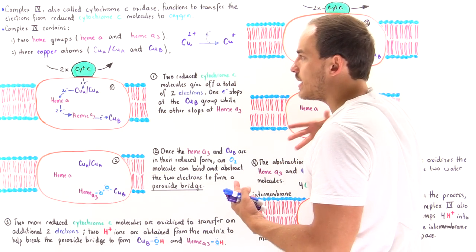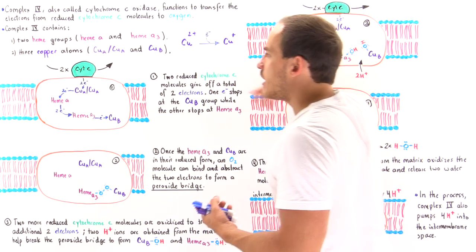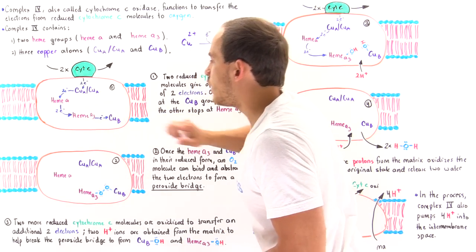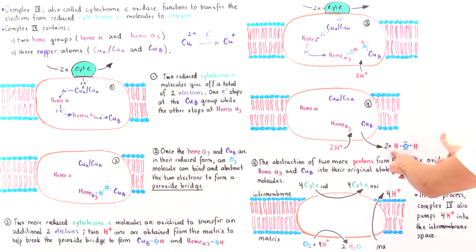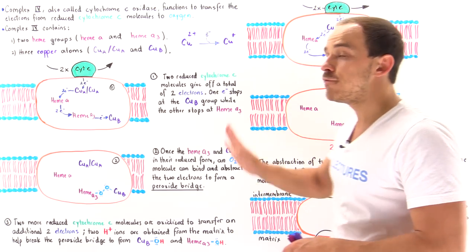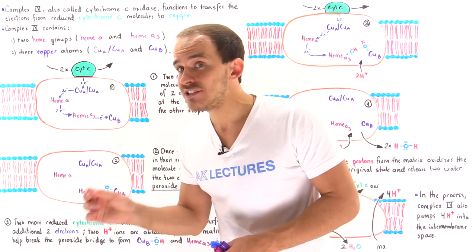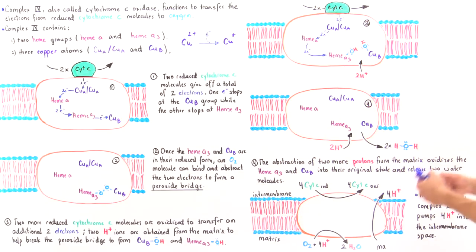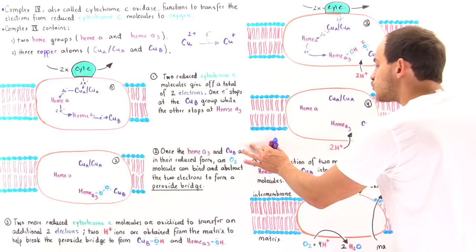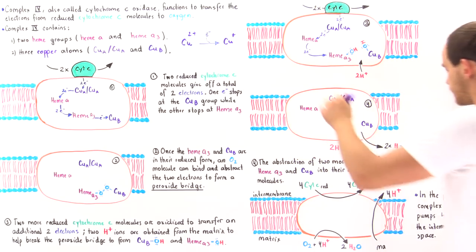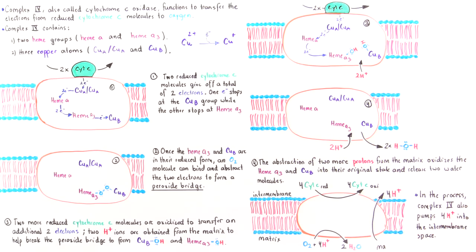As electrons are moved from cytochrome C to the final groups and the two water molecules are formed, a total of four protons — four hydrogen ions — are pumped from the matrix of the mitochondria to the intermembrane space, contributing to the proton electrochemical gradient.